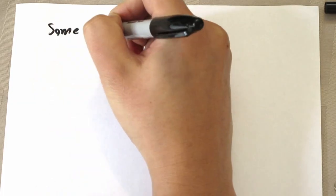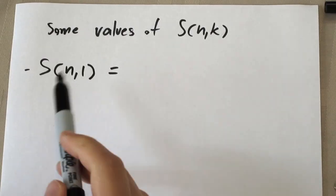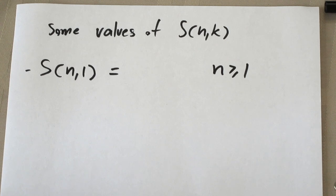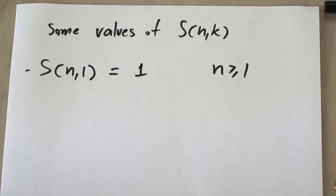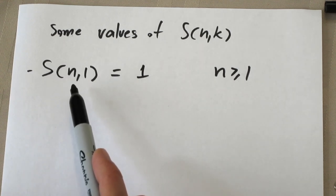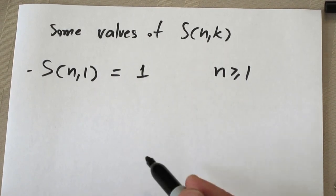Even without a closed formula for all S(n,k), we can compute some special values. S(n,1) for n≥1: you have n objects and one box, so the only way to partition is to put all n numbers into that one box. So S(n,1) = 1.